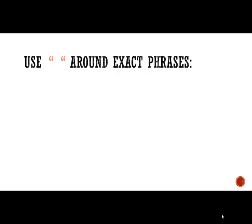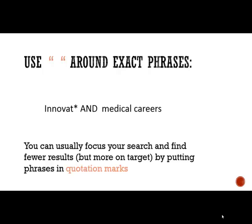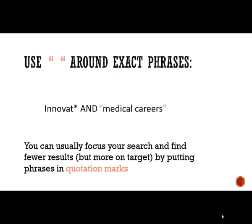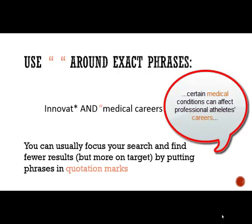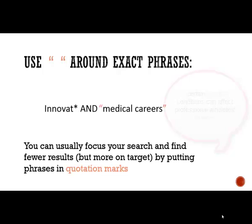Another tip is to use quotation marks when you're looking for an exact phrase. In my example, if I don't use quotation marks around medical careers, I will still find certain articles that have those two words right next to each other with the meaning that I want. But I could also end up finding something like this — the word medical is there and the word careers is there, but they're not right next to each other. This is especially important when you're searching databases that contain full text, such as Summon.